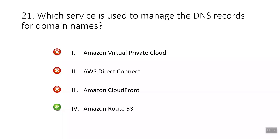Amazon VPC is a service that lets you launch AWS resources in a logically isolated virtual network. AWS Direct Connect establishes a dedicated private connection between your data center and VPC. Amazon CloudFront is a content delivery service that uses a network of edge locations to cache and deliver content to customers worldwide.